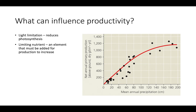We can also have limiting nutrients — elements that must be added in order for production to increase, such as nitrogen and phosphorus. These are typically really important elements for organisms to increase their production. The amount of precipitation is also going to influence productivity.